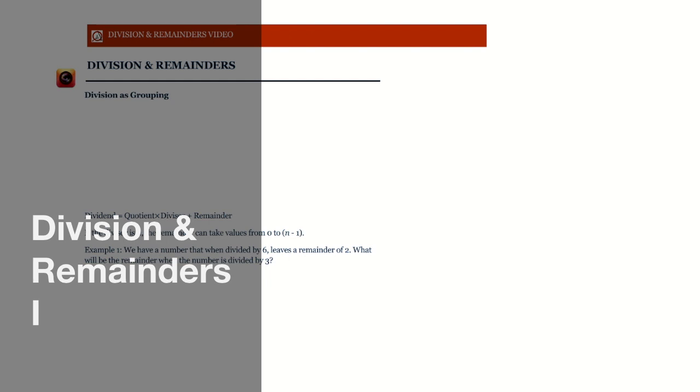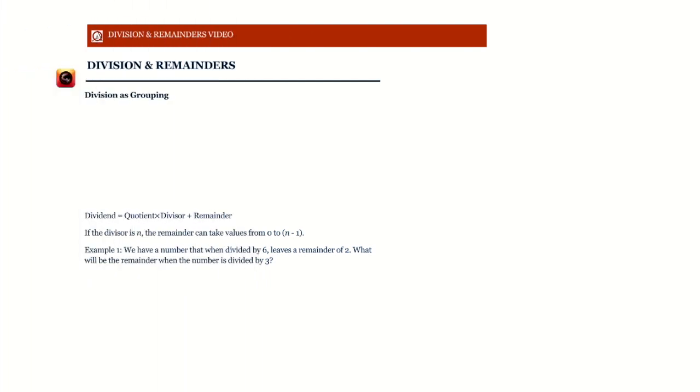We start with division and remainders. Division is basically grouping — when we say that a is divided by b, we are splitting a marbles into groups of b marbles each, and whatever is left over is the remainder. So when I say what is six divided by two, I mean: if I have six marbles and I divide them into groups of two, how many groups will I get?